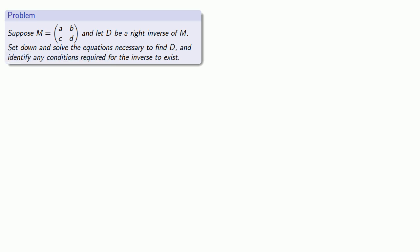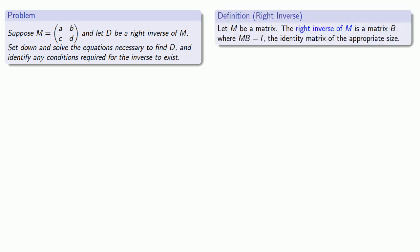So if we want D to be a right inverse of M, we need to be able to multiply by D on the right. Since D is a 2 by 2 matrix, when we multiply it on the right, we'll get a product matrix with two rows. And since the identity matrix must be square, this means that what we have to get is the 2 by 2 identity matrix.